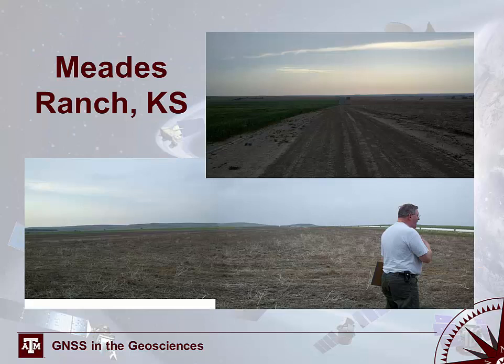Here we can see the magnitude of shift caused by switching from NAD-27 to NAD-83, with ISO lines representing the magnitude of shift in meters. Meads Ranch, Kansas was selected as the center of the NAD-27 datum for a variety of reasons. It was the approximate center of the continental US. In addition, surveying at the time was done by line of sight, and Meads Ranch, Kansas is a vast plain with a large hill in the center. By setting up the initial point at the top of the hill, you can maximize the distance over which you can survey before the curvature of the Earth affects your surveying.